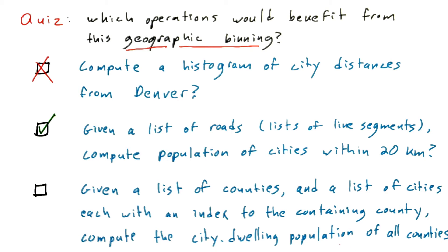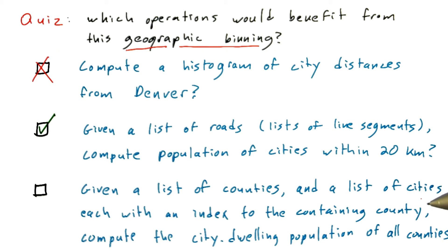Finally, here's a step where geographic binning is simply unnecessary work. If we have a list of counties and a list of cities that already have a pointer to the containing county, then to compute the city-dwelling population of all the counties is simply a matter of having every city update its county. Every city is in at most one county, so you already have a binning in some sense — the counties provide a binning. Even though this isn't a geographic or spatial data structure, the index of counties and pointers from cities to counties gives you a binning, making an additional binning step redundant.